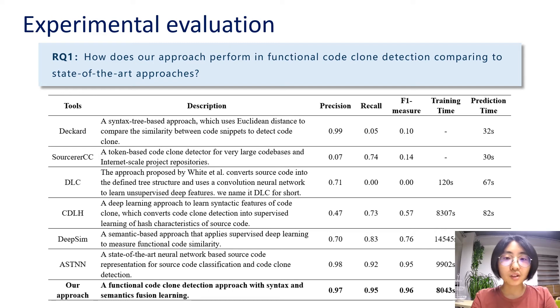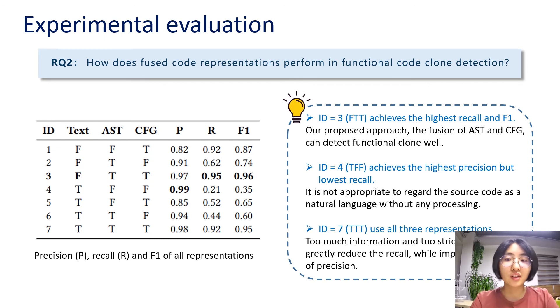DLC incorporates a simple deep learning model, which costs much less time. Compared with other approaches, especially ASTNN, which is the state-of-the-art approach, the training time of our approach is much shorter. Thus, our approach is more efficient. The second research question is that how does fused code representations perform in functional code clone detection?